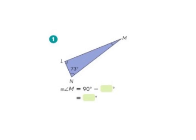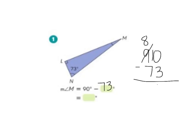Let's look at one more example. Remember that the two acute angles in a right triangle total up to 90 degrees. We know that triangle LMN is a right triangle because angle L is a right angle. So the measure of angle M plus the measure of angle N equals 90 degrees. To figure out the measure of angle M, we take 90 degrees and subtract 73 degrees, which equals 17 degrees. So the measure of angle M is equal to 17 degrees.